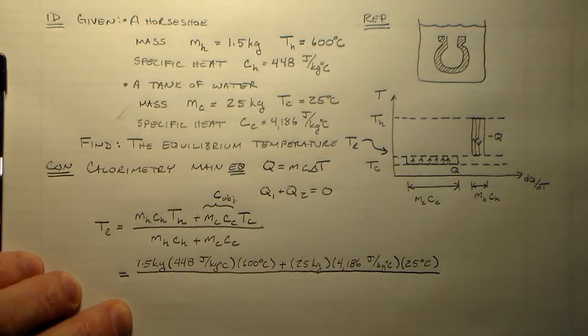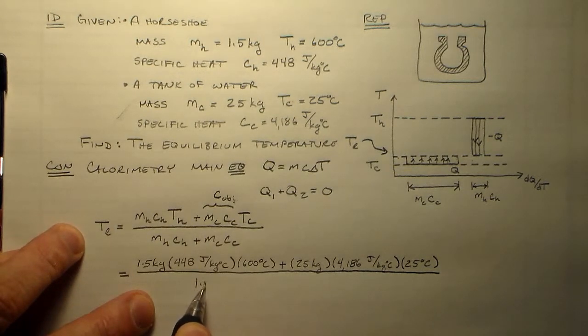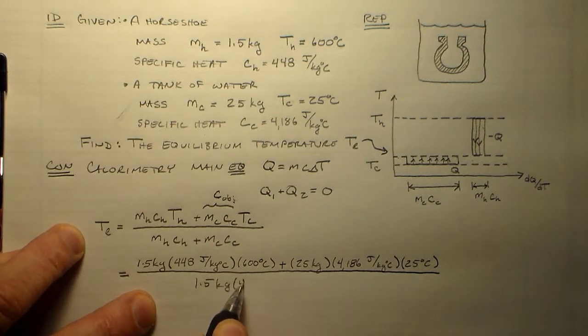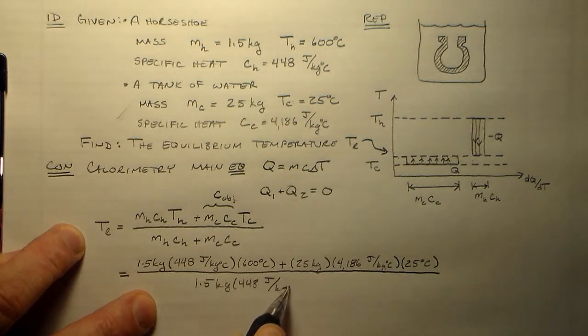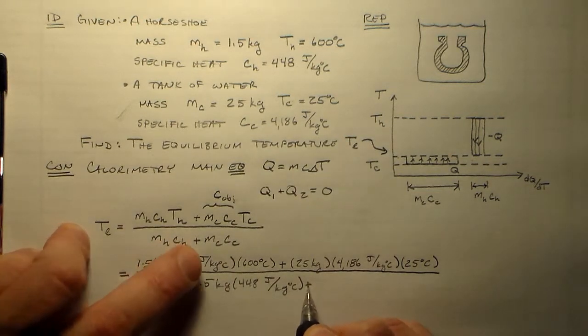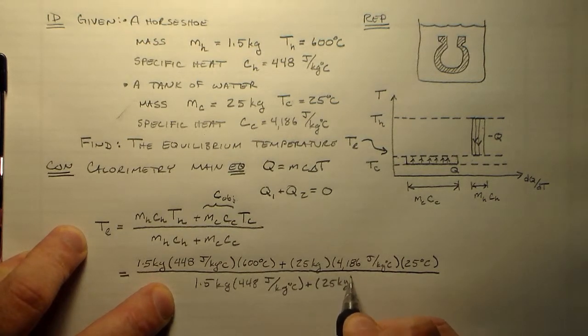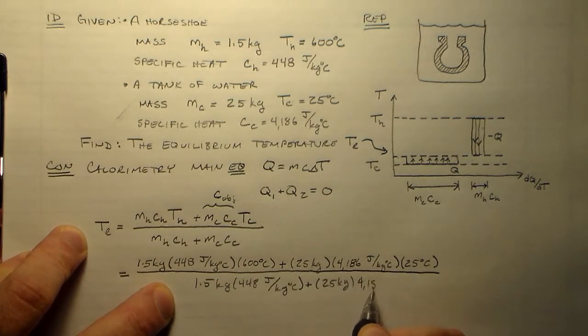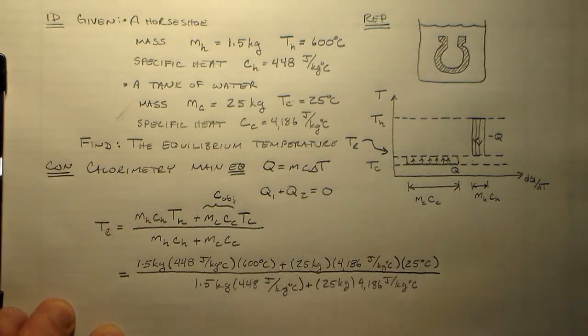Now we're going to divide that all by the weighting factors, 1.5 kilograms times 448 joules per kilogram per degree C. And we can add in the other weighting factor here, which is 25 kilograms times 4,186 joules per kilogram per degree C. And then we just multiply these things out.